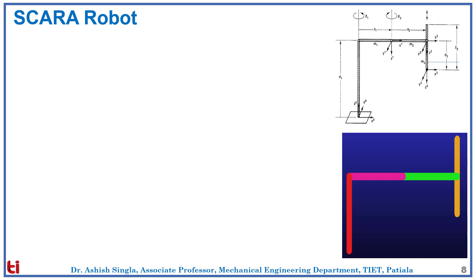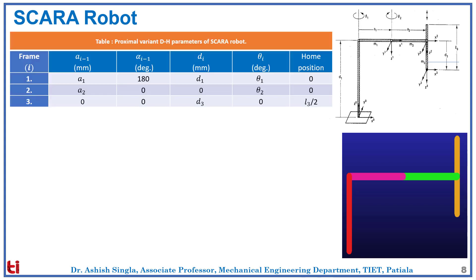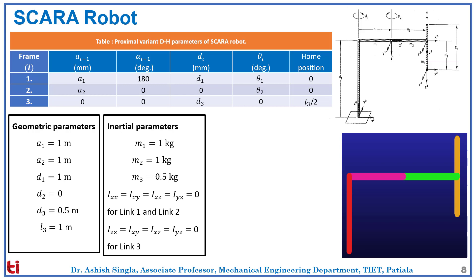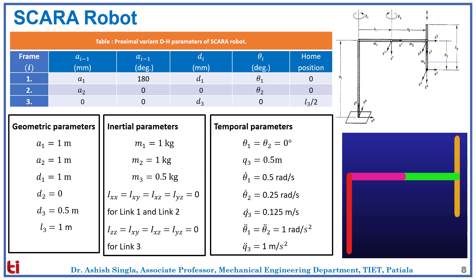Here you can see the SCARA robot which we just saw in Adams. This is the DH parameter table for the robot. Now we will enter geometric parameters, inertial parameters, and temporal parameters to validate our codes.